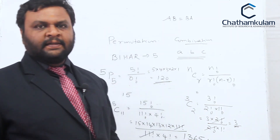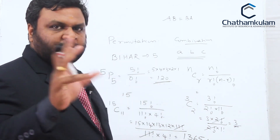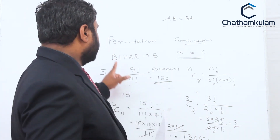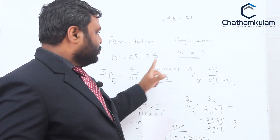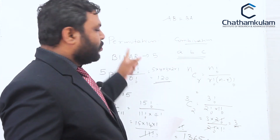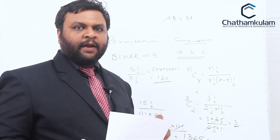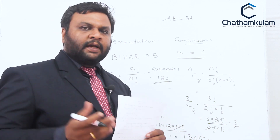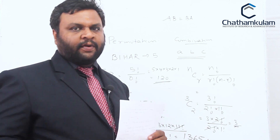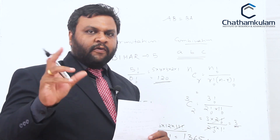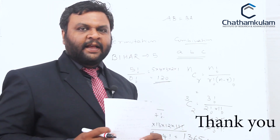All those examples can be solved using the concept of permutation and combination. The formula for permutation is nPr = n factorial divided by (n minus r) factorial. The formula for combination is nCr = n factorial divided by r factorial into (n minus r) factorial. These are the formulas associated with permutation and combination. Thank you.